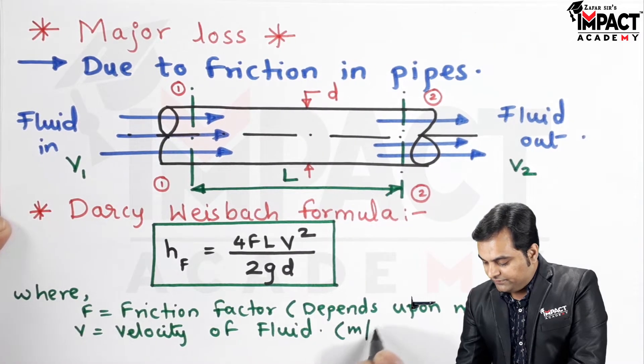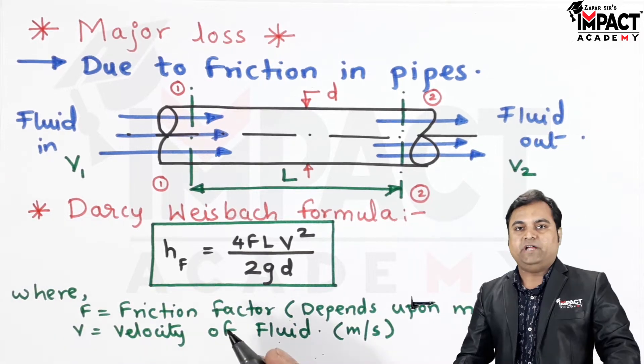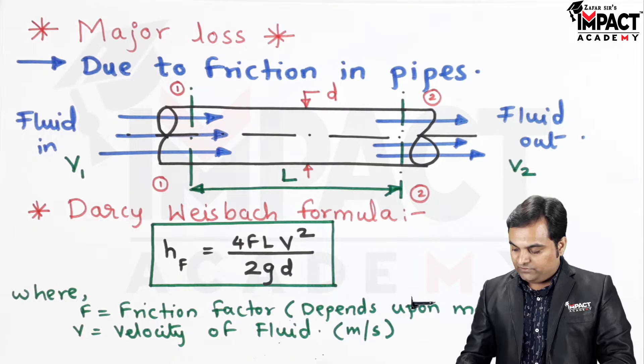The velocity of the fluid is in terms of meter per second. Then g is acceleration due to gravity having the value 9.81 meter per second squared. And D as we know it is the diameter of the pipe.